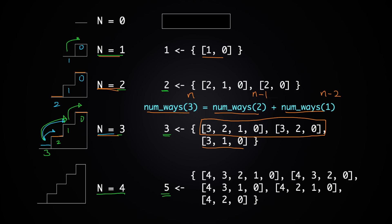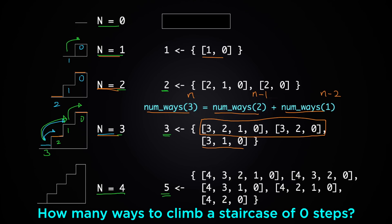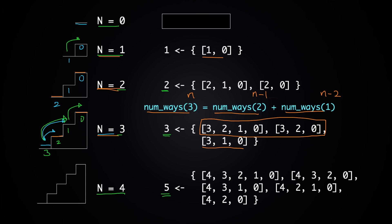What about when n equals 0? I'd argue that num_ways(0) should be 1. Think of it as asking: how many ways are there to climb over a staircase of 0 steps? If you're already at step 0 and the top is also step 0 — there's exactly one way, which is just staying there. So num_ways(0) = 1. This is our base case.